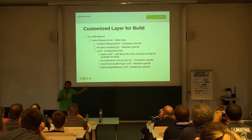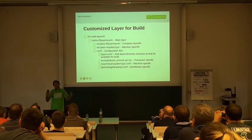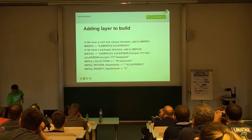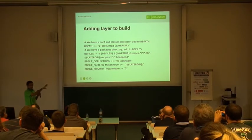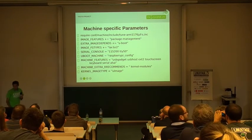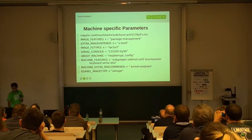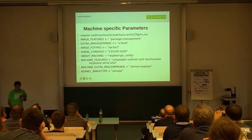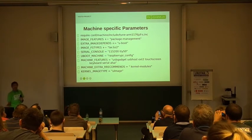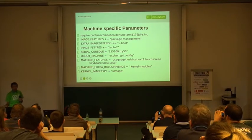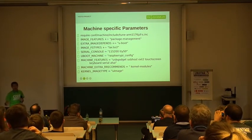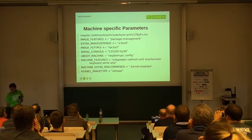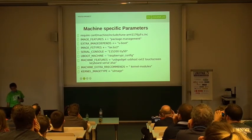I call my distribution Kartenberg.conf because it's thin. If you want a fat one, you'd name it something bigger. It's not enough to just create a layer — you have to add that layer to the build system. This snippet shows how you add a layer. These are machine-specific settings; in this case Raspberry Pi-specific. We are using ARM 1176 JZF with the ZFS file system. If you want package management enabled you add it; if not, you remove it. We are using Uboot as the boot manager. It's always customized. You can also enable USBs, touch screen, and choose whether kernel modules should be installed in the image.